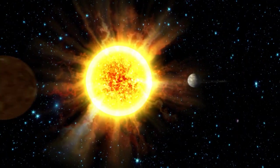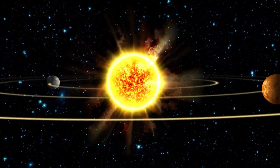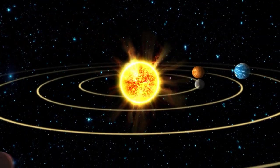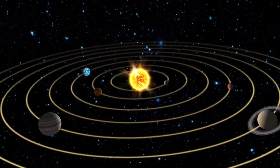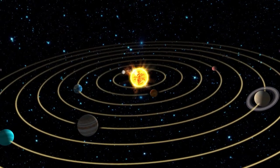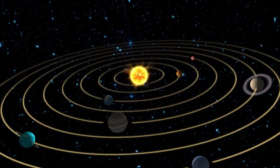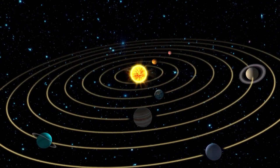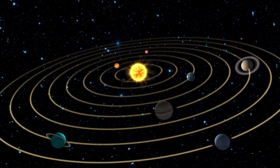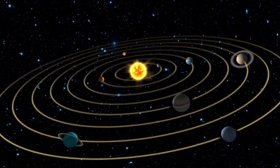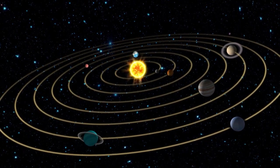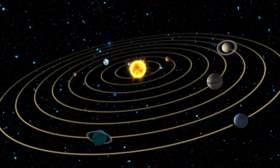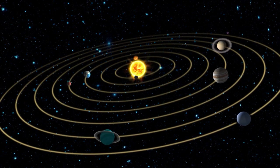We often think of our solar system as mostly empty space, populated by a few planets millions upon millions of kilometers apart, with some asteroids and comets sprinkled in between. But in reality, our home in space is a far more dynamic place than that.